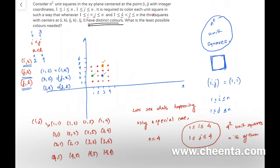That's how you should color all 16 points or boxes: whenever you choose three points in this pattern, you want them to have distinct colors. Of course, if we were allowed to use 16 different colors there would be no problem — we'd use a different color for each box. But we want to accomplish this using the least possible number of colors.